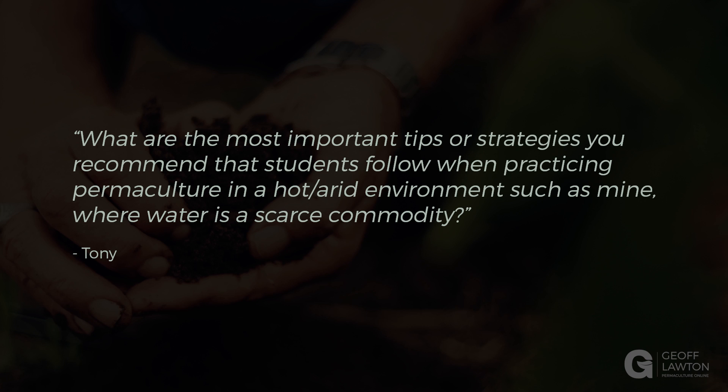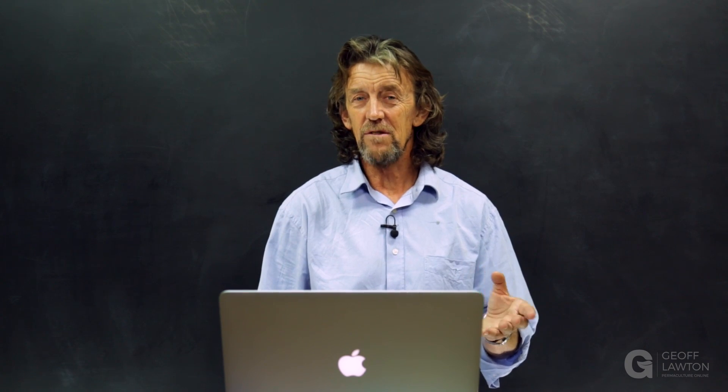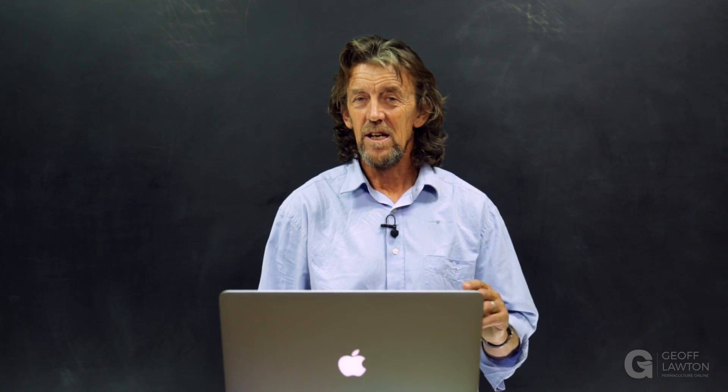Anti-evaporation is your priority — that's the main strategy. Shade is one way, so increasing shade is very important, and also increasing wind buffering. Shade will extend the water by reducing evaporation, wind buffering will also reduce evaporation, and increasing organic matter does as well. All of that can be done with hardy legume trees.